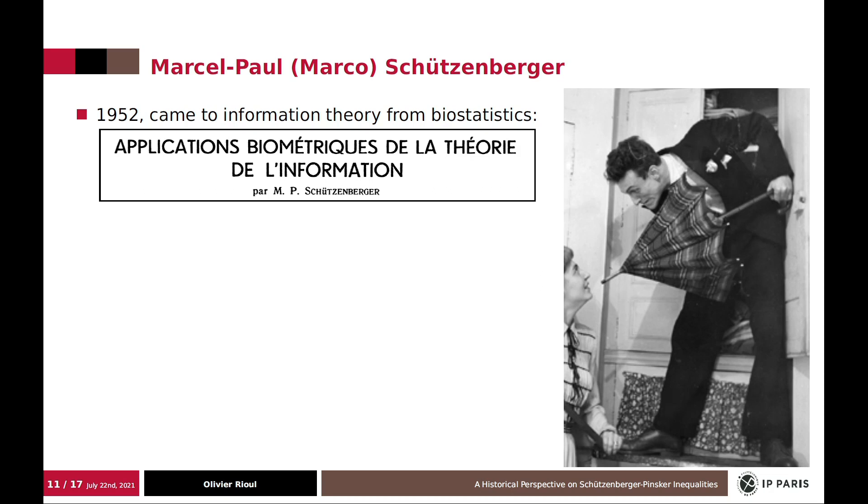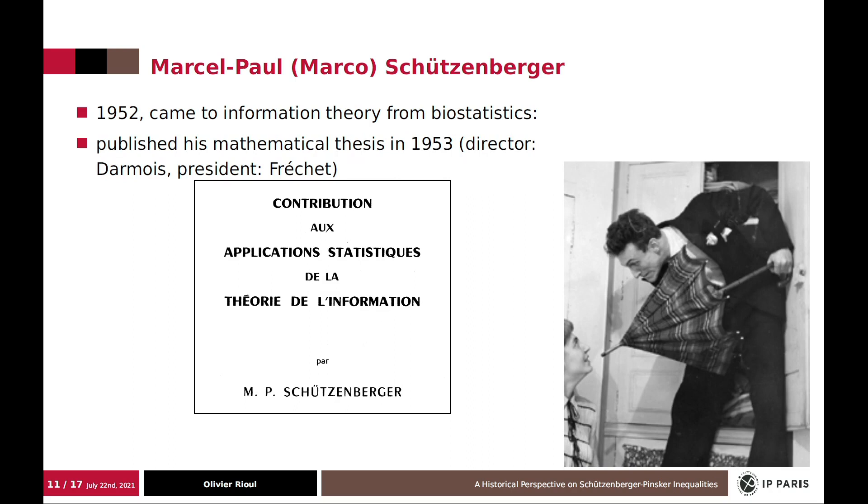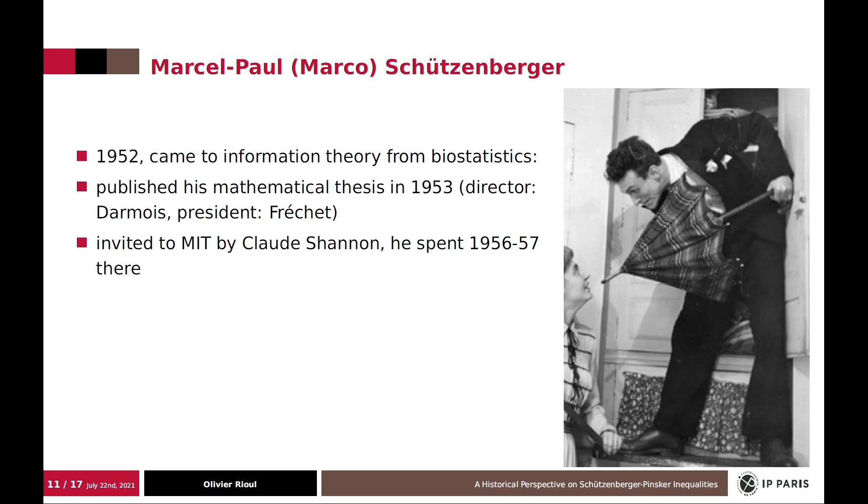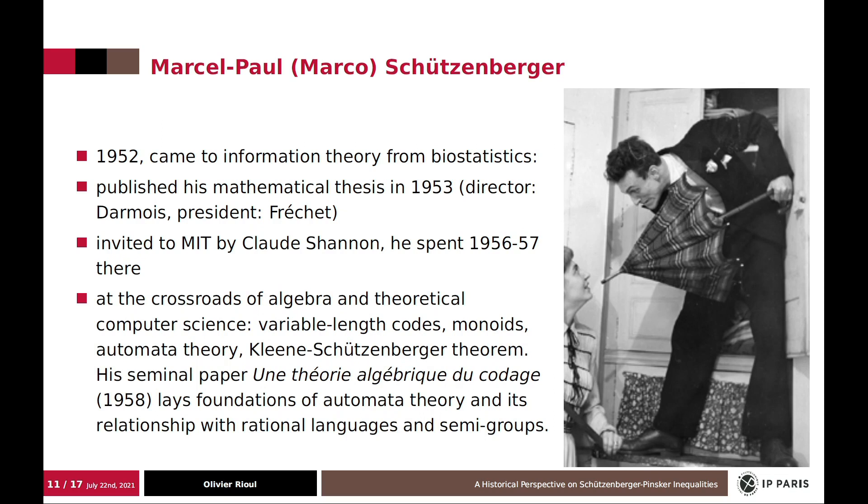In 1952, he came to information theory, published his first paper on information theory from biostatistics. And he defended his mathematical thesis, advised by Darmois and with the President Fréchet, on a contribution of the statistical application of information theory. And from this thesis, he was invited by Claude Shannon at MIT, which he spent the year 1956, 1957 there.